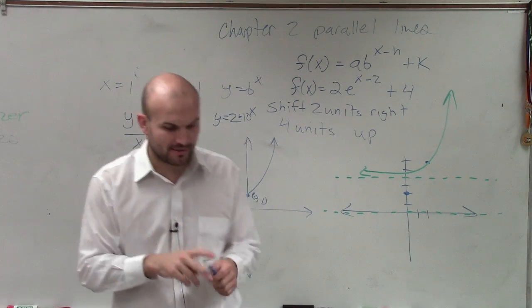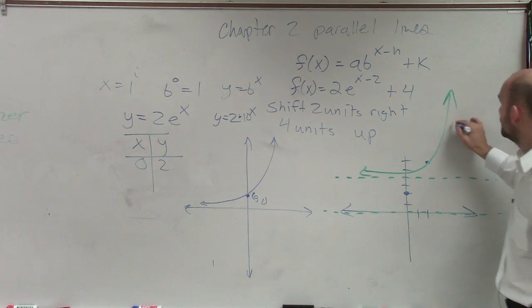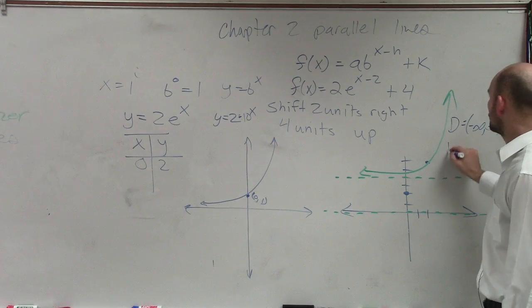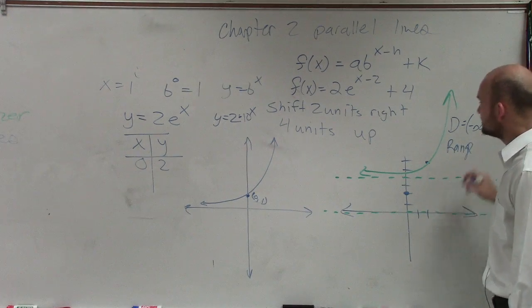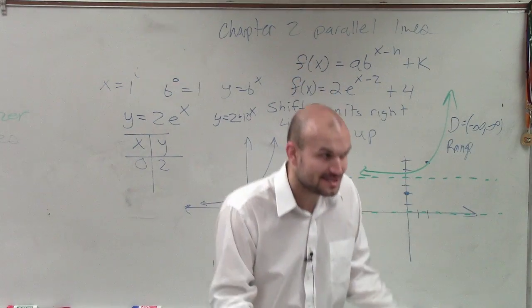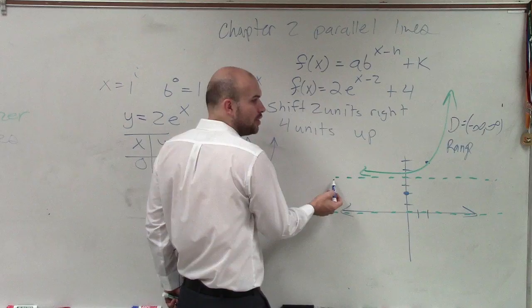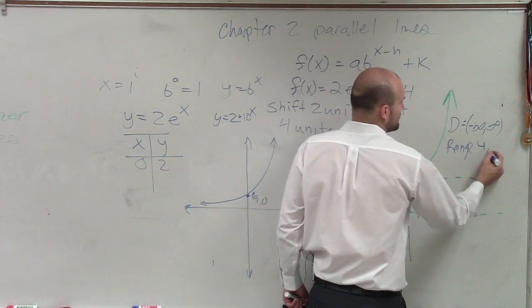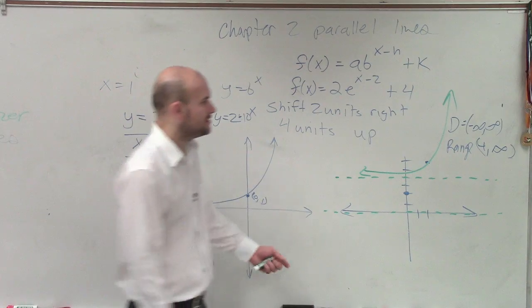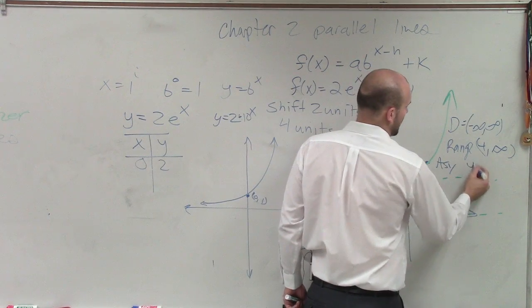The next thing I just want to let you guys do is if you're going to do your domain, the domain of your exponentials is going to be all real numbers. Your range is now, what you guys see is your asymptote has been lifted. So therefore, your graph is not going to be going below 4. So your range is from 4 to infinity. And you could say the asymptote is at y equals 4.